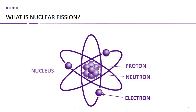To understand the science of nuclear fission, it's important to first grasp the basic structure of an atom. Atoms are the building blocks of matter and are composed of three main components: protons, neutrons, and electrons.